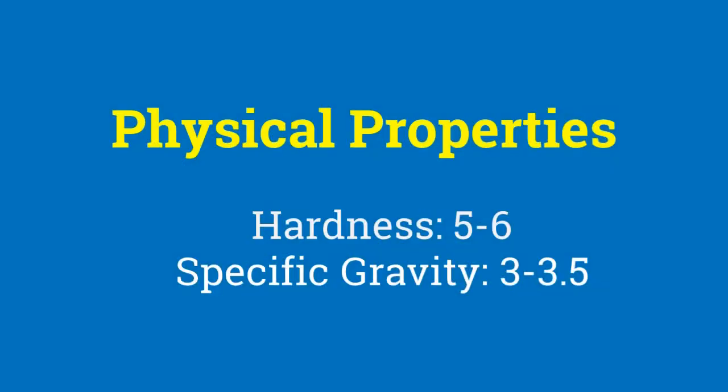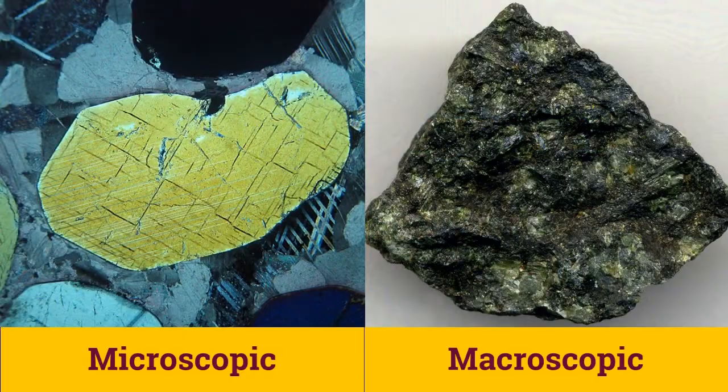Pyroxenes have a hardness ranging from 5 to 6, which increases with increasing iron content. They have a specific gravity of 3 to 3.5, which is higher than that of quartz. Optical properties of various pyroxenes vary systematically, as most pyroxenes are colorless to greenish under the microscope and black to bronze in hand specimen.